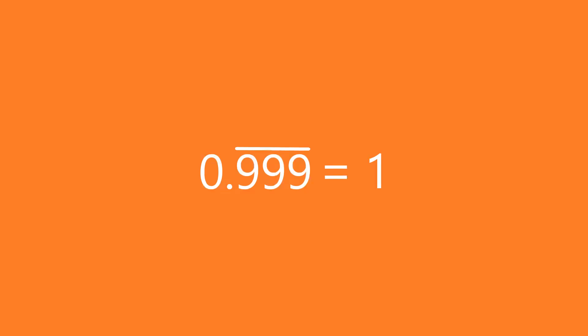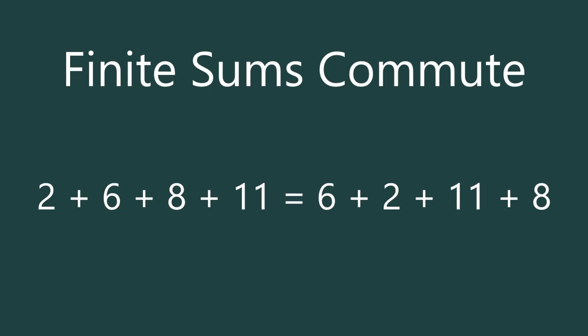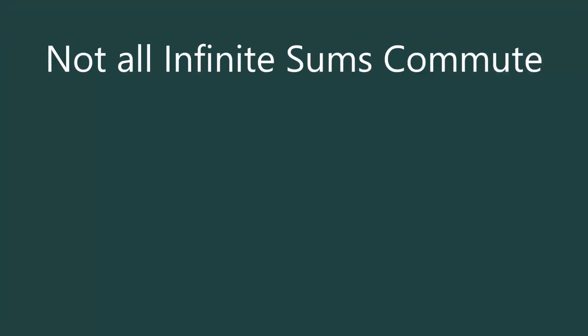But there's far more bizarre things that can happen when you add up an infinite number of terms. We all know that if you add up a finite number of terms, you can change the order however you want and not change the sum. But for some infinite sums, rearranging the terms can cause them to add up to something different. Such infinite sums are called conditionally convergent.